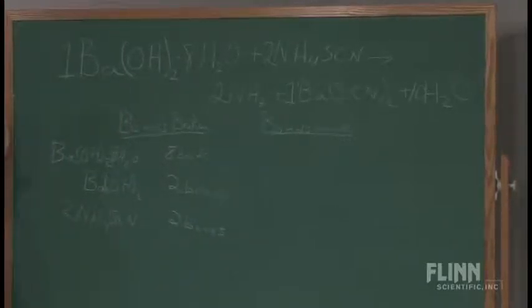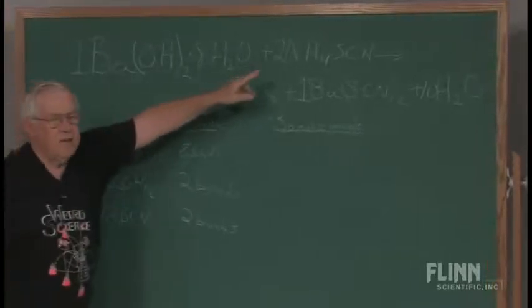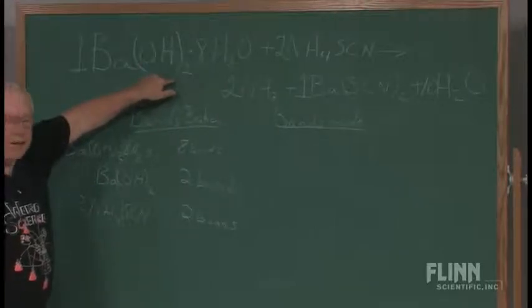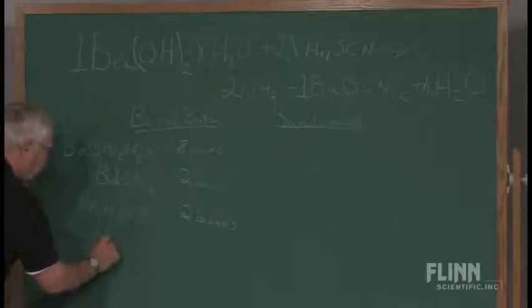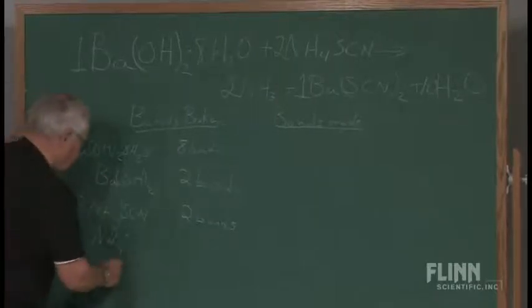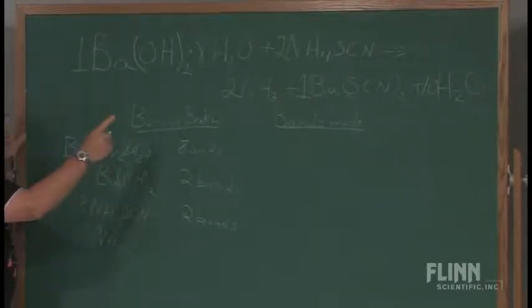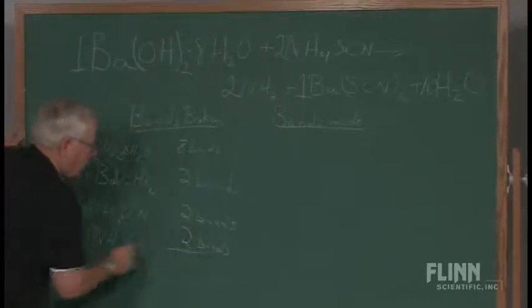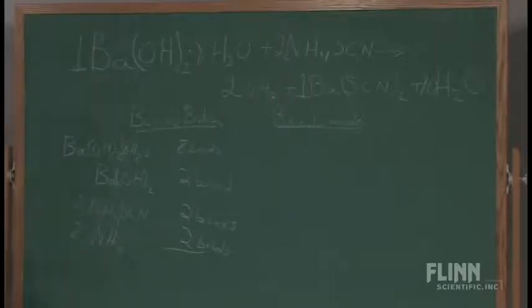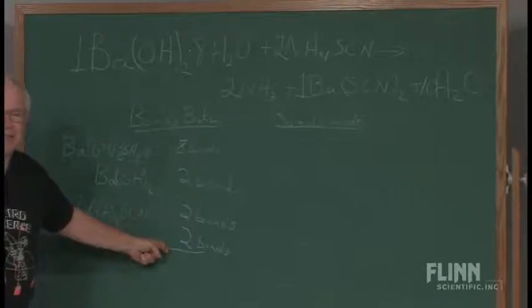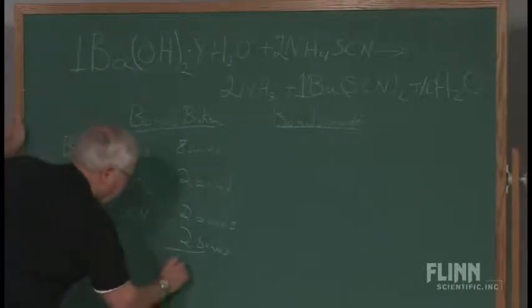And now the NH4 had to lose Hs so that I could make my two waters here. So the NH4+ had to lose one of those Hs. One of those Hs came off, and that happened twice. So there are two bonds here. So let's count the bonds that I claim are broken. Eight and two and two and two make fourteen bonds. Fourteen bonds are broken.